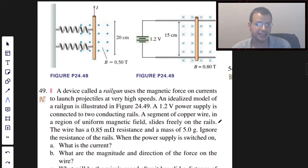A segment of copper wire in the region of uniform magnetic fields slides freely on the rails. The wire has a 0.85 milliohm resistance, so I have to convert the milli to 10 to the negative third, and has a mass of five grams, also have to convert that over to kilograms.